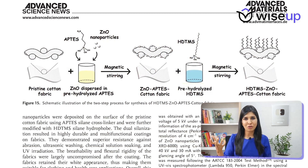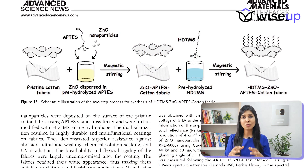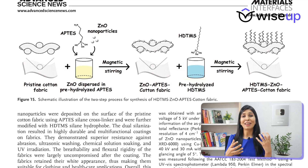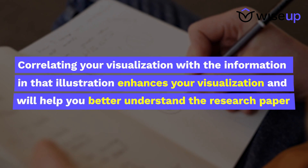While reading the materials and methods section, try to locate the illustration for it, because usually the methodology section is also illustrated in the form of a diagram. Try to correlate your visualization with the information given in that illustration. This will further enhance your visualization ability and help you better understand the research paper.